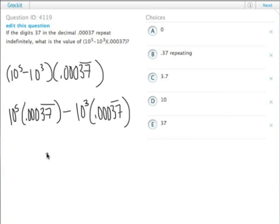Then it's just a matter of moving the decimal places. This guy, we moved five places: one, two, three, four, five. That equals 37.37 repeating.